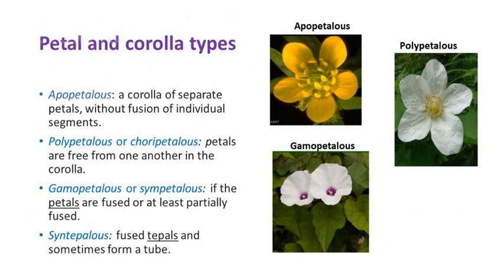Flowers are also categorized depending on the perianth arrangement or color. Biseriate refers to a perianth in two whorls. A flower with a green perianth is called sepaloid, while a petaloid flower has a brightly colored perianth. There are different petal and corolla types too. When a flower has a corolla with separate petals without fusion of individual segments, it is called apetalous. Polypetalous or choripetalous flowers have petals that are free from one another. In gamopetalous or sympetalous flowers, the petals are fused or at least partially fused. Syntepalous flowers have fused tepals and sometimes they form a tube.